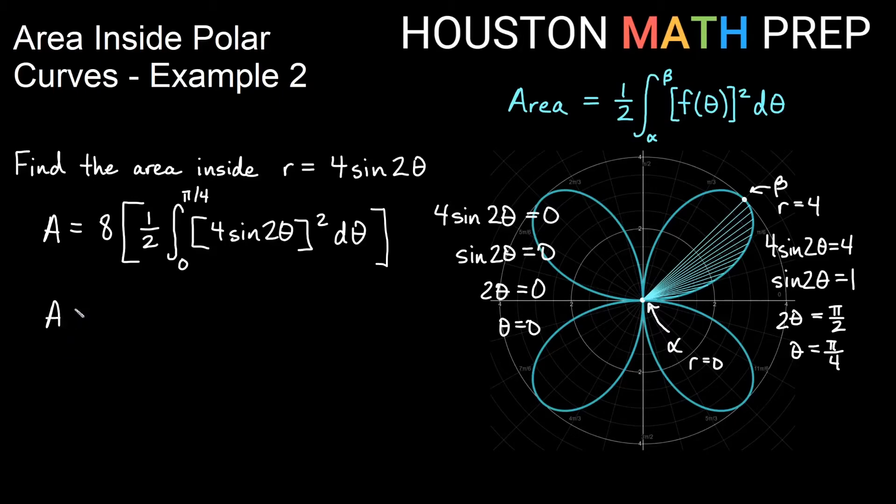Let's do some simplifying here. Eight times a half gives me four outside of my integral zero to pi over four. When I square this, I square the four and the sine 2 theta. So I'll get 16 sine squared 2 theta d theta. I can bump the 16 out also, right? So we could say 4 times 16 is 64 integral zero to pi over four.